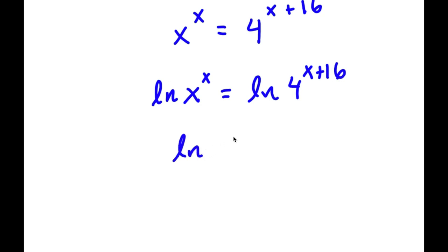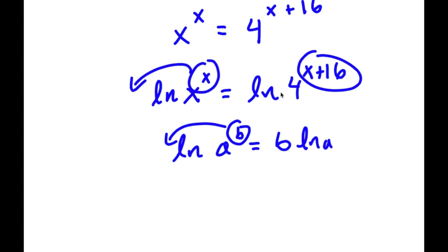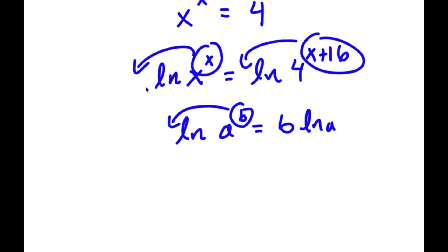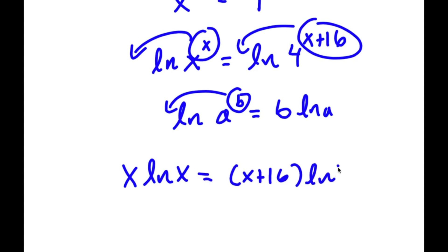If I take the ln of something in the form a to the power of b, I can move the exponent b to the front, so it equals b times ln a. So I have ln x to the power of x — I can move x to the front — and ln 4 to the power of x plus 16 — I can move x plus 16 to the front. So now I have x times ln x is equal to x plus 16 times ln 4.